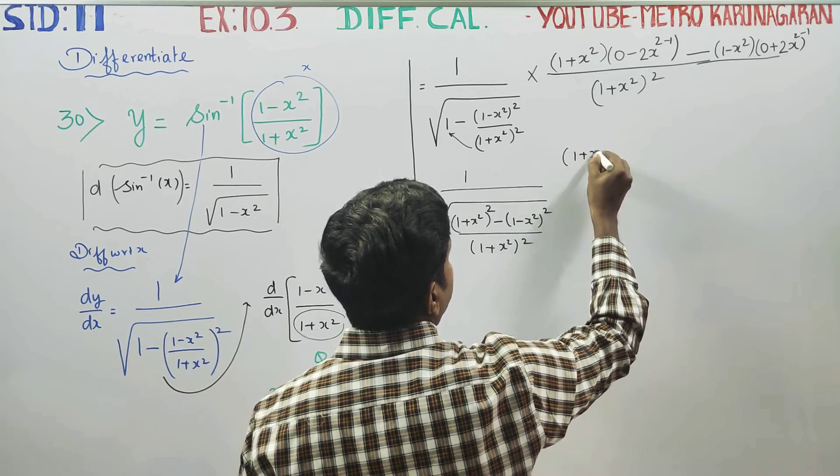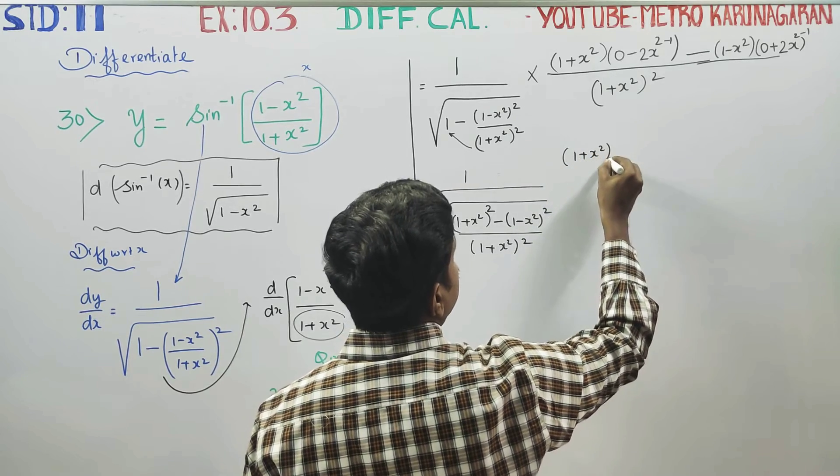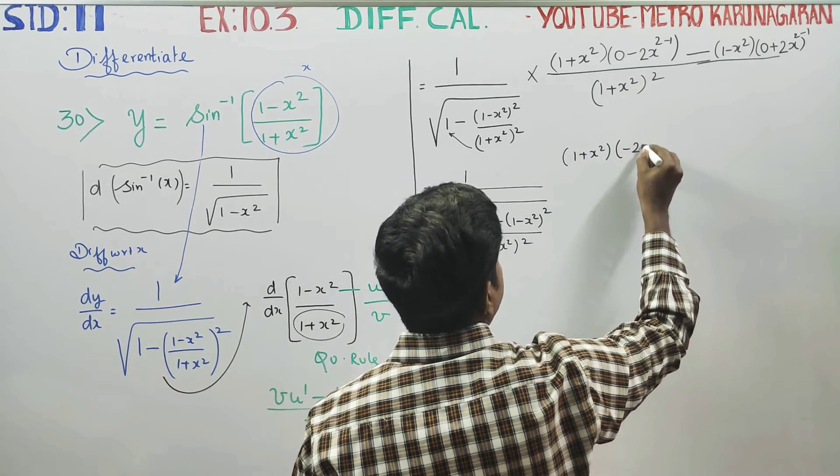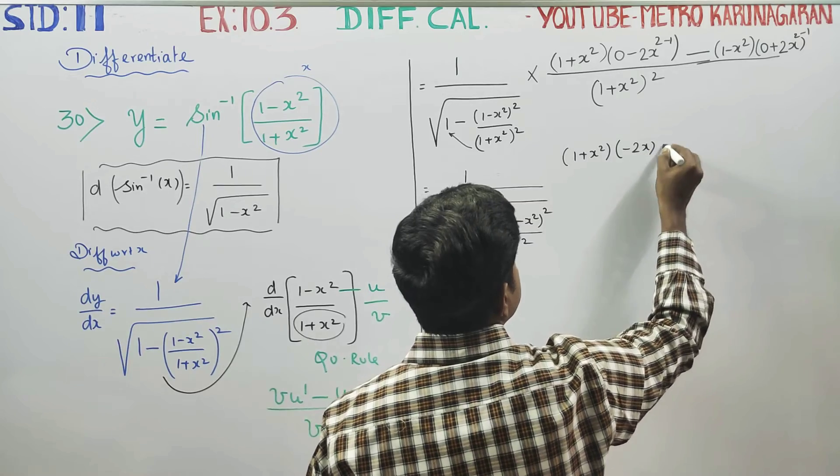In the numerator, we have (1 plus x square). Subtracting, this gives us minus 2x.